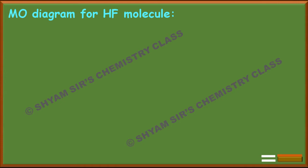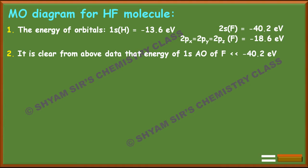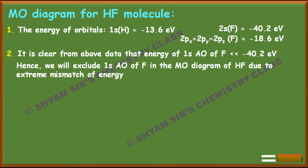To construct the MO of HF, you must first know the energy order of orbitals of hydrogen and fluorine atoms. The 1s orbital of hydrogen atom is -13.6 eV, the 2s orbital of fluorine atom is -40.2 eV, and the 2px, 2py, 2pz orbitals of fluorine are -18.6 eV. The 1s orbital of fluorine, at -40.2 eV, is much lower in energy, so we exclude it from the MO diagram due to extreme energy mismatch.